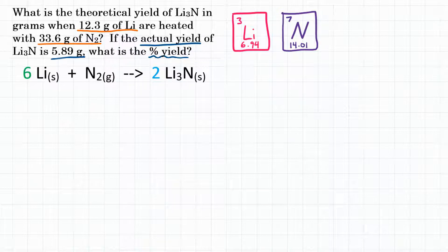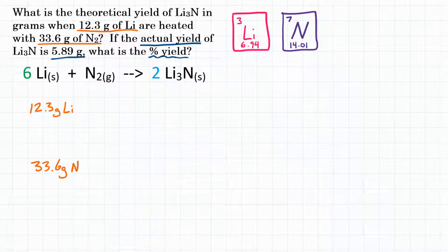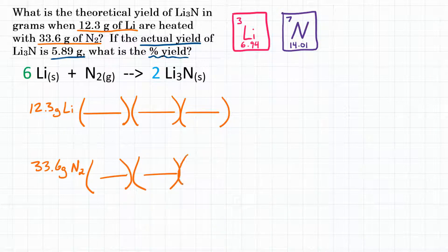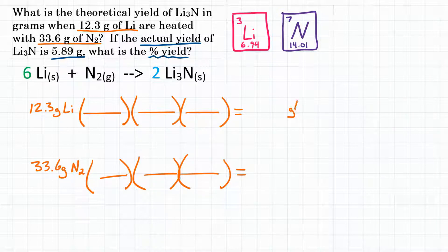We need the masses of both reactants: 12.3 grams of Li and 33.6 grams of N₂. We are going to multiply each of those by three conversion factors, because we're going from mass of a reactant to mass of a product, and that takes three steps to get our final answer in grams of Li₃N produced.